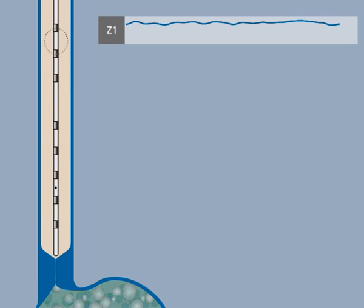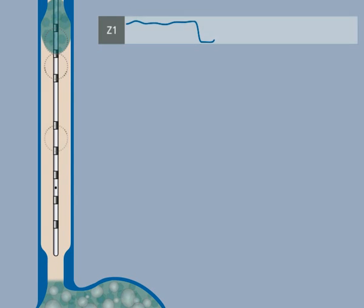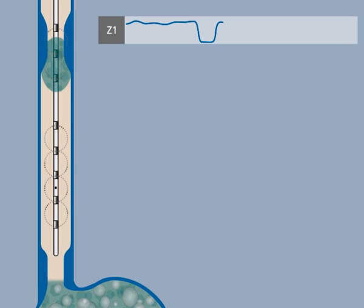This is the baseline level of the impedance signal, caused by the esophageal mucosa. When a liquid bolus touches both rings, the impedance drops. When there is no more liquid on channel 1, the value of the impedance signal will return to the baseline.